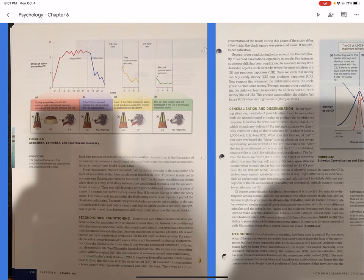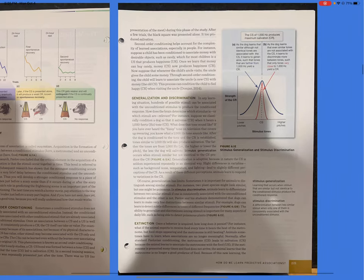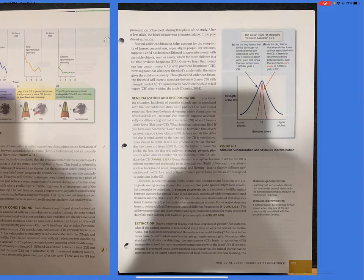Second-order conditioning helps account for the complexity of learned associations, especially in people. For instance, suppose a child has been conditioned to associate money with desirable objects, such as candy, which for most children is an unconditioned stimulus that produces happiness. Once we learn that money can buy candy, money now produces happiness. Now suppose that whenever the child's uncle visits, the uncle gives the child some money. Through second-order conditioning, the child will learn to associate the uncle with money. This process can condition the child to feel happy when visiting the uncle.